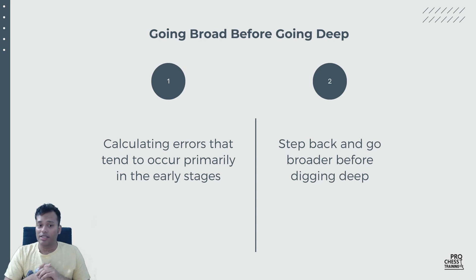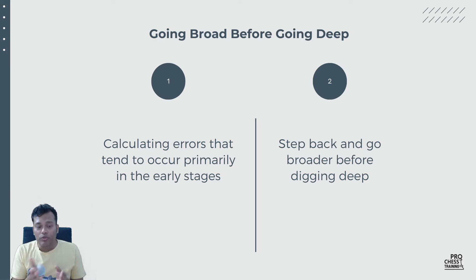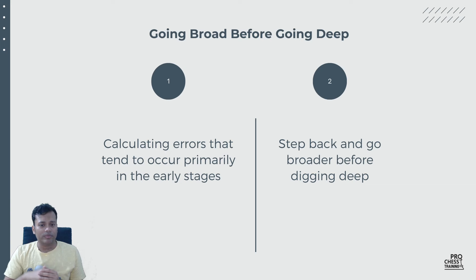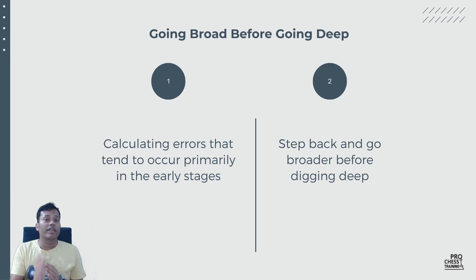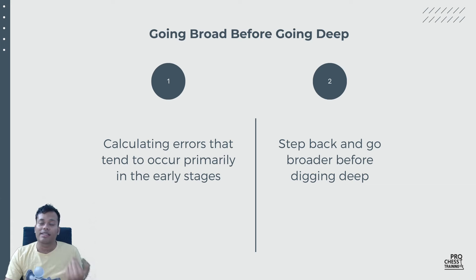The next chapter is very practical: going broad before going deep. Take some of your games — 10 or 20 games — and see where the mistakes are happening. Is it at the end of calculation or at the beginning, like move 2 or move 3? Usually you will notice it is happening at the beginning. Calculation errors tend to occur primarily in the early stages. So before going deep, pause, step back, and go broader before digging deep. Many blunders happen because we went very far in one particular line and missed a second-move candidate.